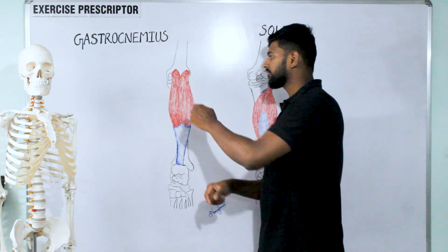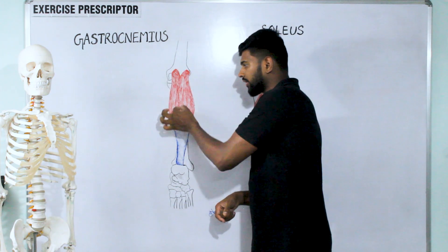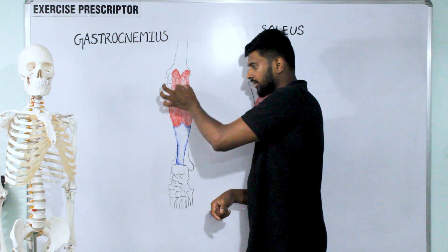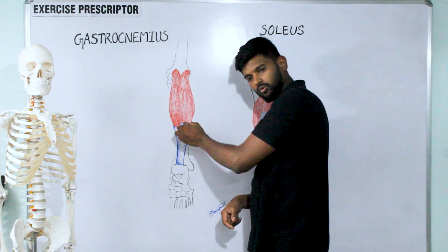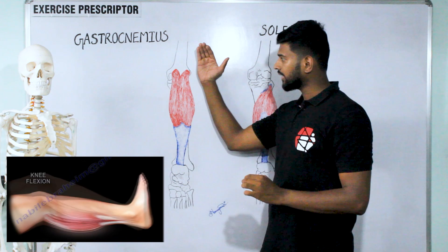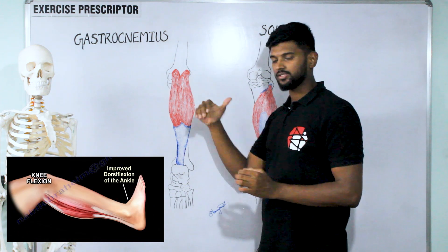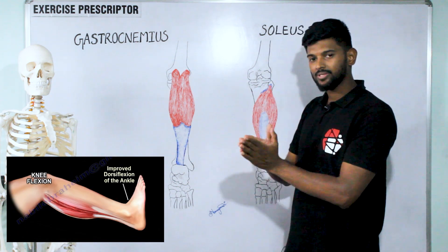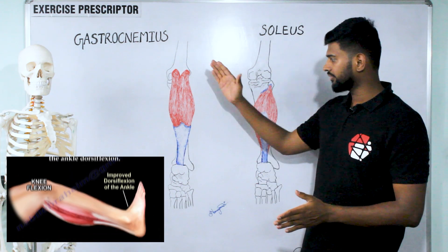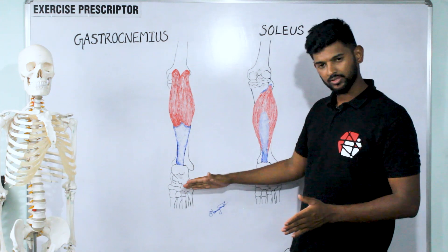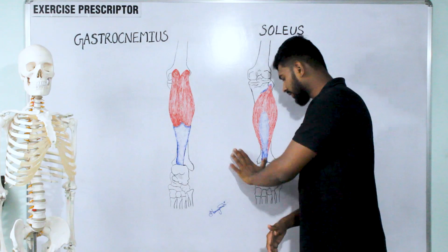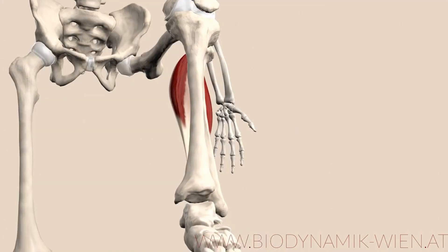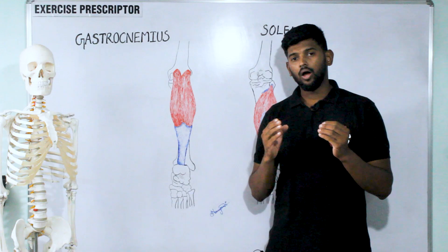When the gastrocnemius muscle fibers contract and pull downward, they create knee flexion. So gastrocnemius helps in both knee flexion and plantar flexion, while soleus only helps in plantar flexion of the ankle joint.